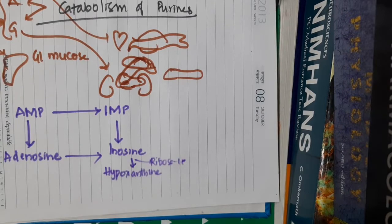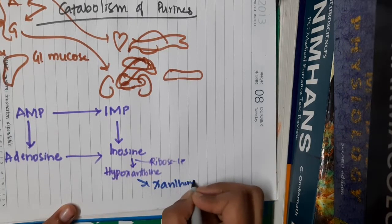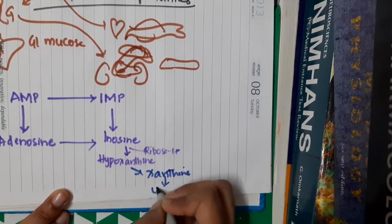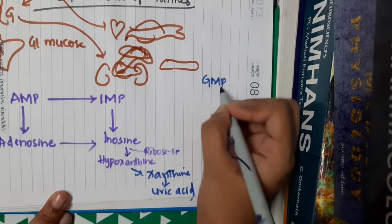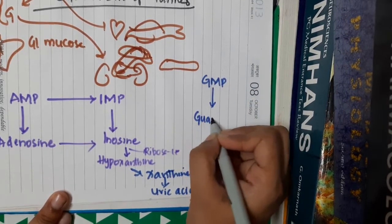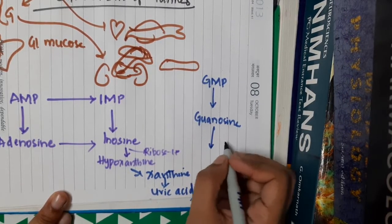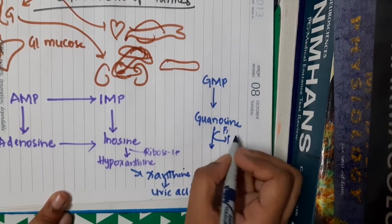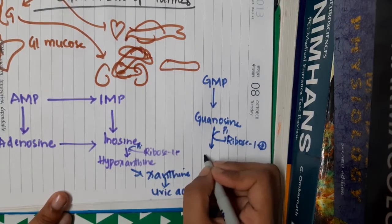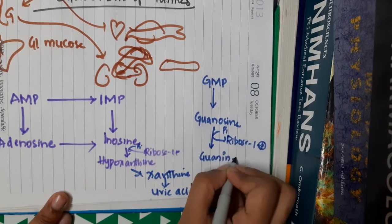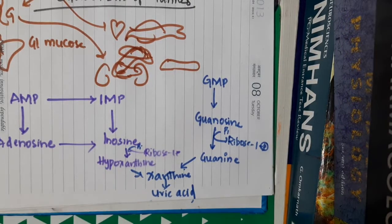Hypoxanthine gets converted to xanthine, and xanthine, in the presence of xanthine oxidase, forms uric acid. For guanine: guanosine monophosphate (GMP), in the presence of nucleotidase, forms guanosine. Guanosine, in the presence of purine nucleoside phosphorylase, releases ribose 1-phosphate and yields guanine. Guanine, in the presence of guanine deaminase, forms xanthine. Xanthine is then converted to uric acid.